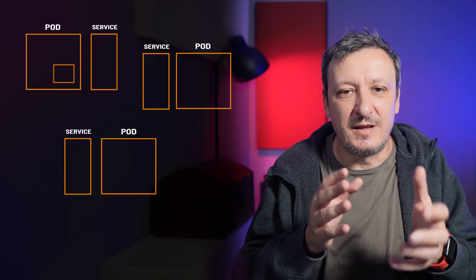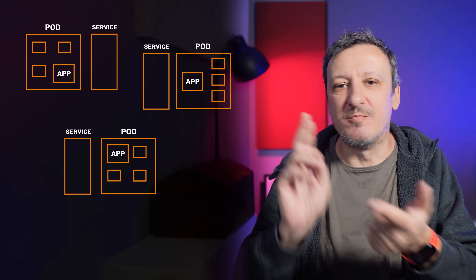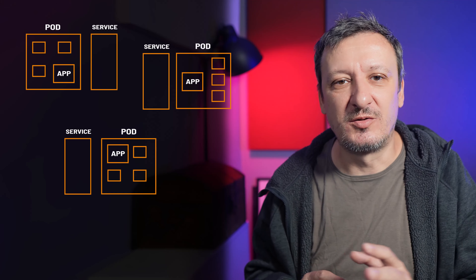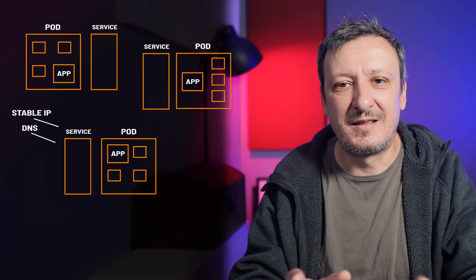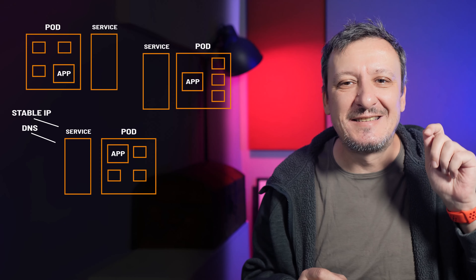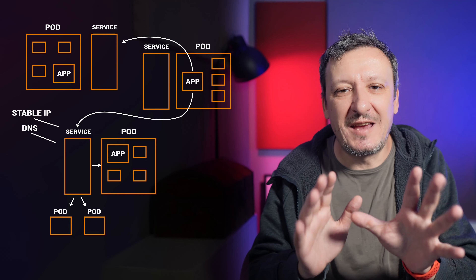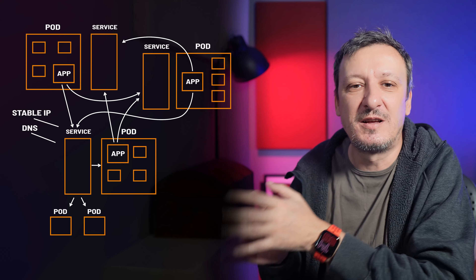A pod container is a container with an application and any number of sidecar containers that perform additional functions like logging, monitoring, and so on and so forth. In this video, we do not care about pods beyond their relations to services. A Kubernetes service is yet another abstraction that provides a stable IP address and DNS name for a set of pods. What matters is that we have services associated with pods so that other pods can reach them. All that an application needs to do is use the service name and port to communicate with pods associated to that service.